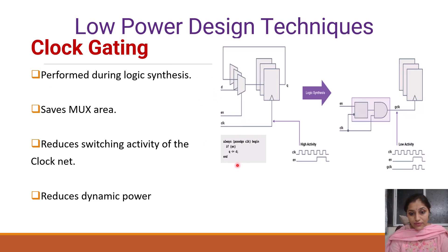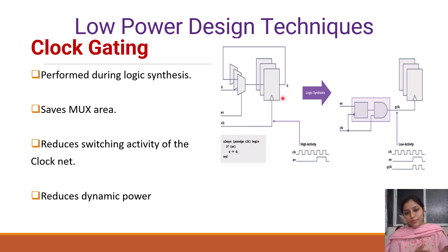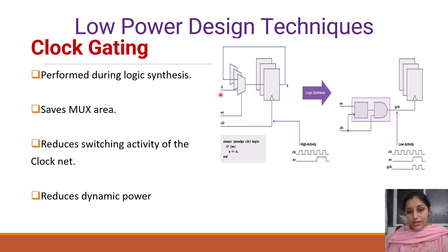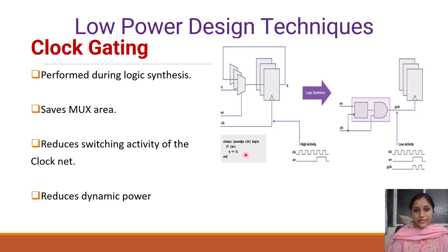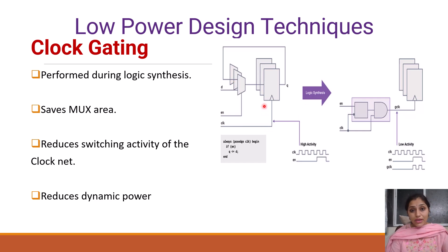Here, the code for a D flip-flop is written: if enable equals 1, then Q is assigned as D; else Q is assigned as Q, meaning Q carries the previous value. If enable is activated, only then we get a new value — D comes to Q. In this case, the circuit is continuously receiving a clock, and when enable becomes 1, we get a new output. When we write the equation as an if-else statement, it generates hardware as a multiplexor, and that multiplexor consumes some area on the chip.